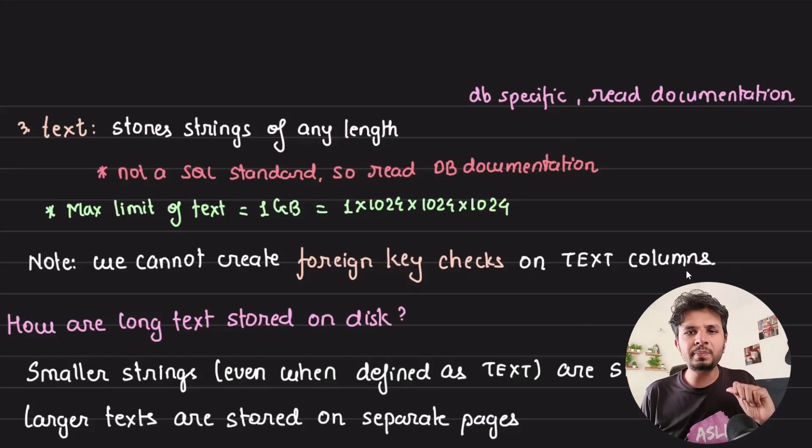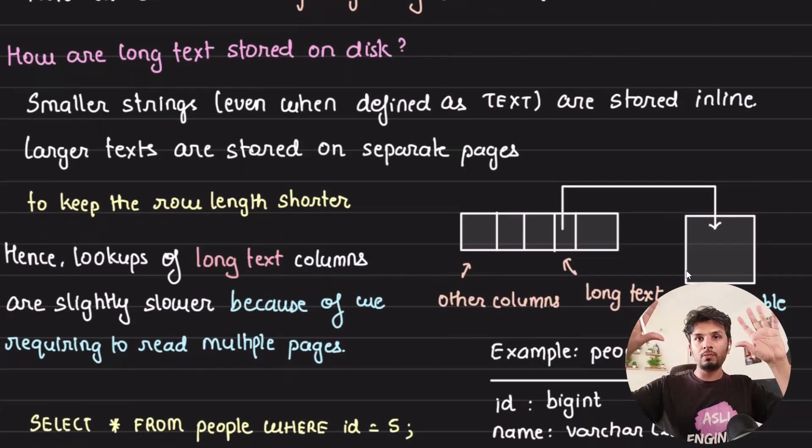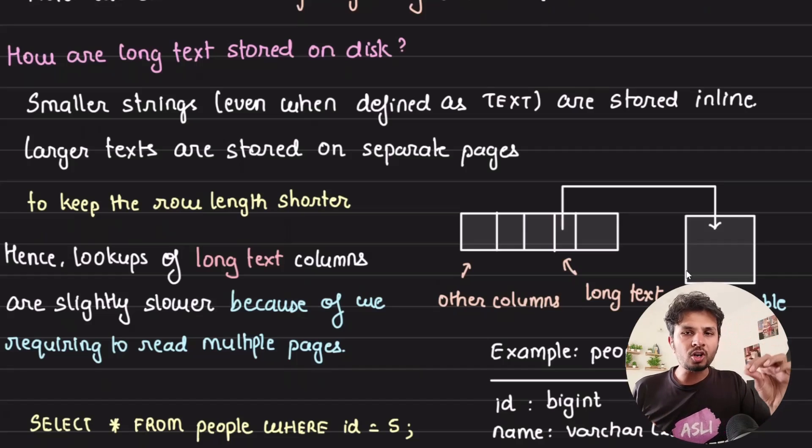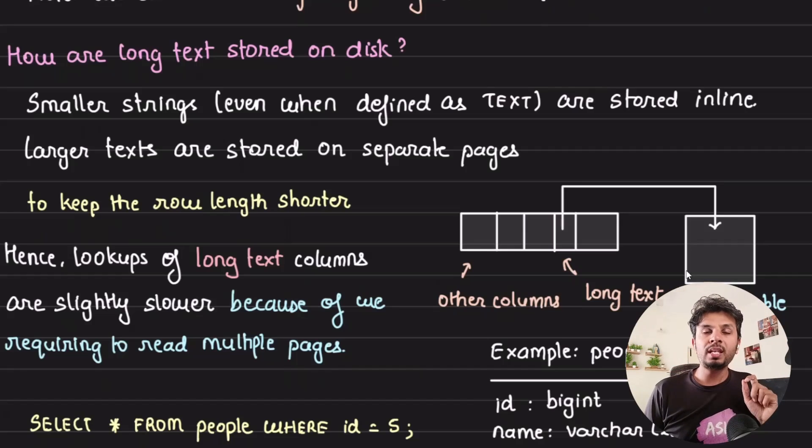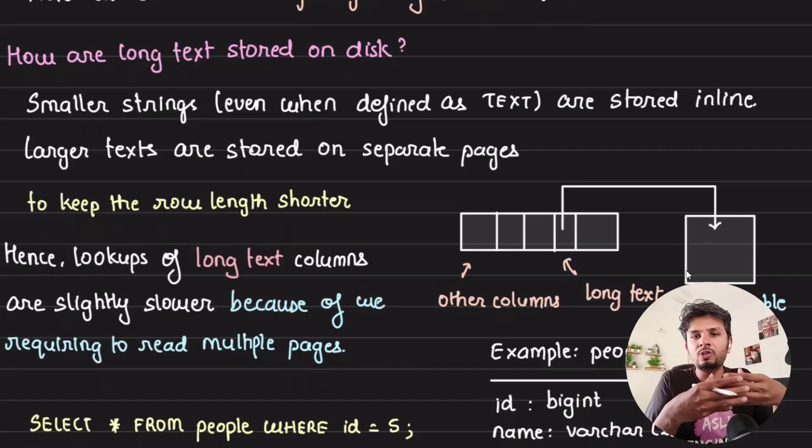Let's understand how these long texts are stored. It's a common misconception that long text data will always be stored in a separate disk location, but that doesn't happen. Even if your column type is text, if you store a smaller string, it would be stored inline with other columns of the row. But if you're trying to store larger text, it would be stored on a separate page of the disk. This is done to keep the row length shorter.